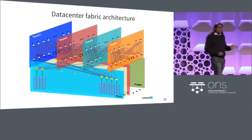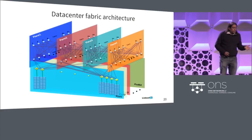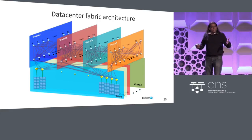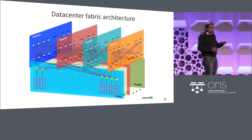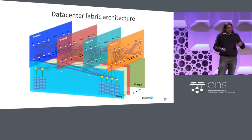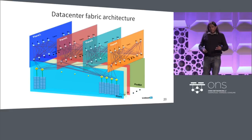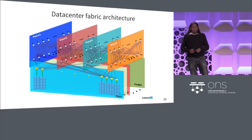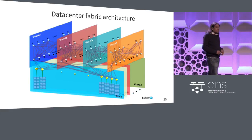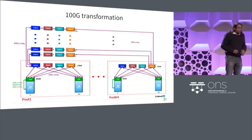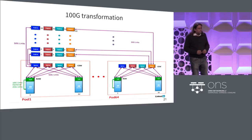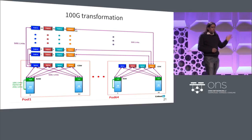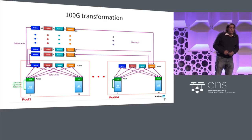This is a three-dimensional view of the same network, showing how we have built our planes and how they spread across. If you were to traverse from pod one to pod 64 in this architecture, you're looking at a switching latency of 2.5 microseconds. In the future-proofing aspect, we also did a 100-gig transformation early last year — we were a little bit on the cutting edge of it with the Tomahawk platform.